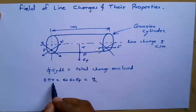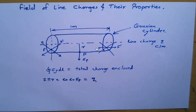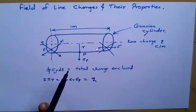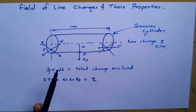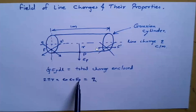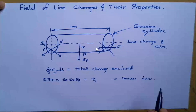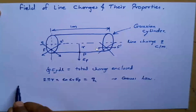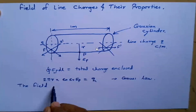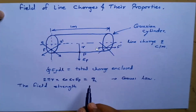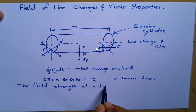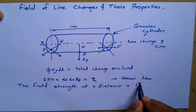Why is it 2 pi r? In the previous case for point charges, we considered a hollow sphere, so the surface area was 4 pi r squared. Here we consider a cylinder, so the surface area is 2 pi r times L. When L equals one meter, it becomes 2 pi r. So we can say 2 pi r into epsilon-0 epsilon-r into EP equals Q as per Gauss's law. From this, EP can also be written as the field strength at a distance r from the conductor.